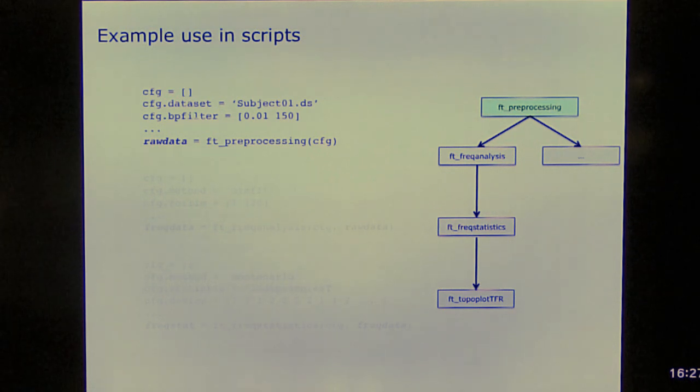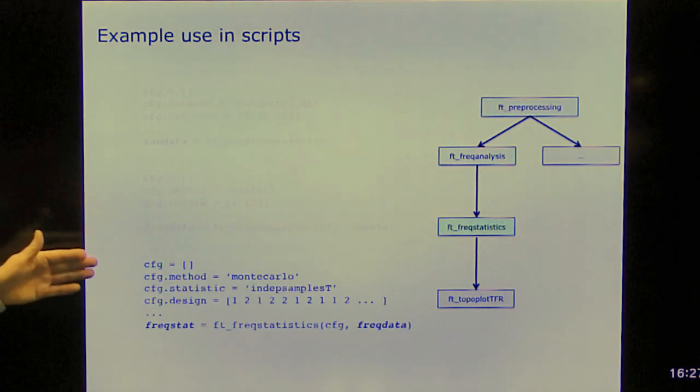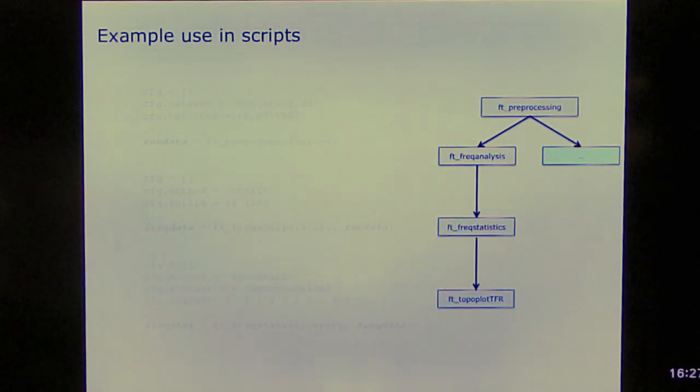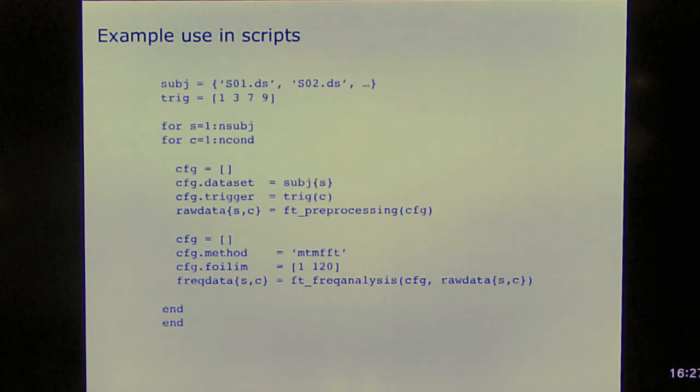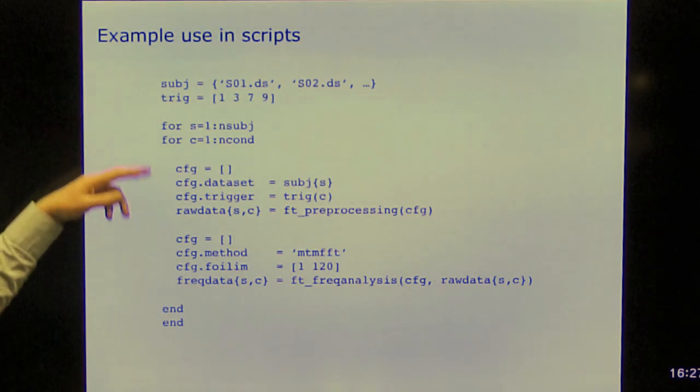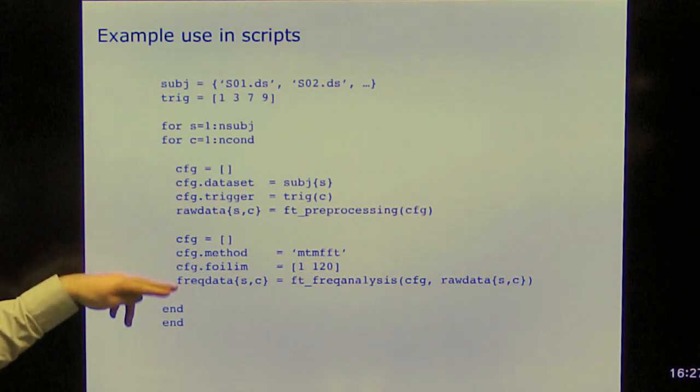So what we do is we start with writing a script. Very often we would start with a pilot recording on a pilot subject, and we start analyzing. So we would start with preprocessing, frequency analysis, and then frequency statistics, and then we would continue with plotting or some other analysis pipeline. And once you're happy with the results that you're getting for a single subject, what it very easily allows for you to do is to put it in a for loop. So what you can do is you can specify all the subjects, you can specify the trigger codes that you want to analyze, and for each of the subjects, for each of the conditions, you call FT preprocessing and FT freq analysis.